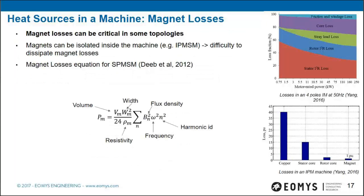Magnet losses due to eddy currents can be very critical in some topologies, despite having a lower absolute value than other losses. Because magnets are often isolated inside the machine — for example inside interior permanent magnet machines — heat generated at that spot is not well dissipated. As we saw, magnet temperatures are very critical for machine efficiency. An equation for magnet losses for a surface permanent magnet with rectangular magnets accounts for frequency and harmonic components.